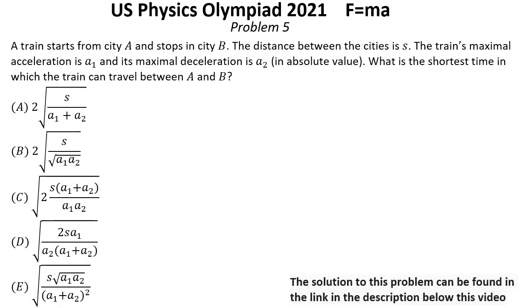Problem number 5. A train starts from city A and stops in city B. The distance between the cities is S. The train's maximal acceleration is A1 and its maximum deceleration is A2 in absolute value. What is the shortest time in which the train can travel between A and B?